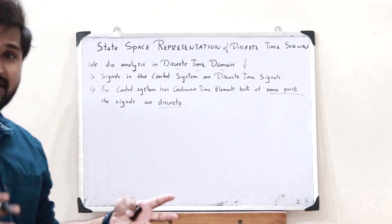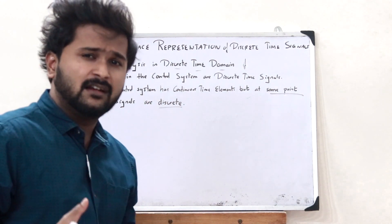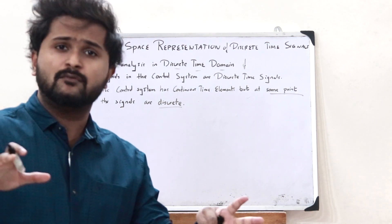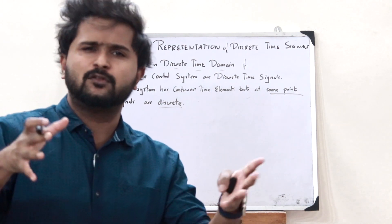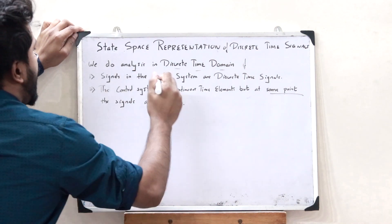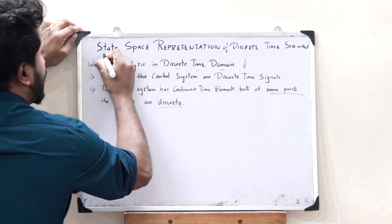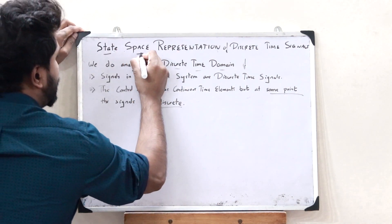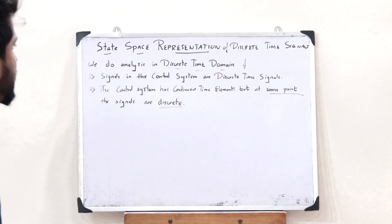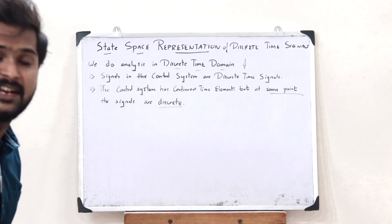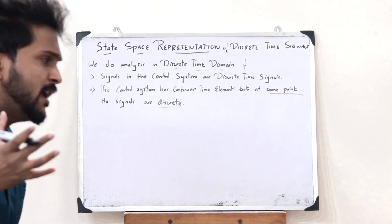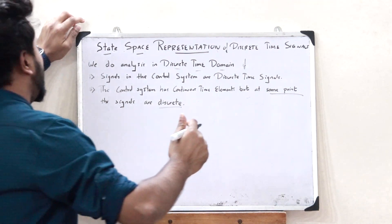I have discussed in detail what we refer to as discrete time signals. If you haven't watched that video, please do watch it — I will leave the link in the description below. For the purpose of state space representation of control systems in the discrete time domain, we have certain variables.